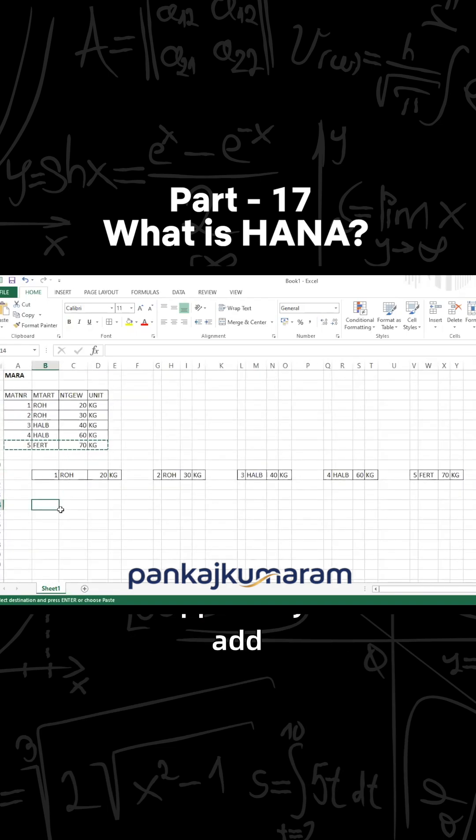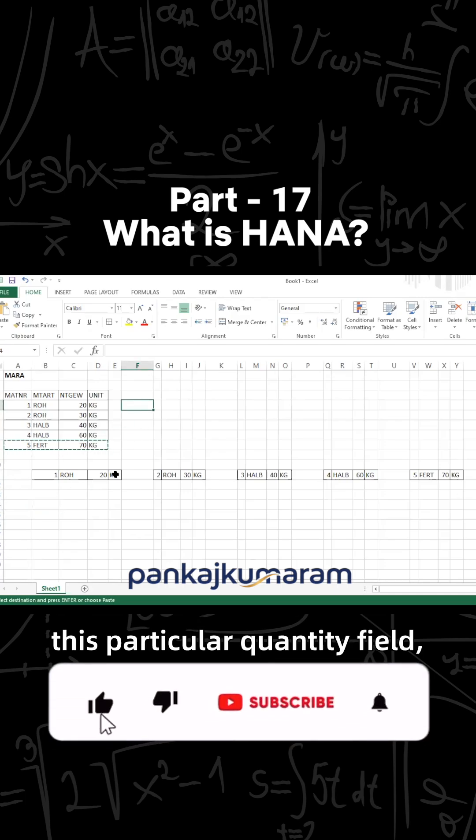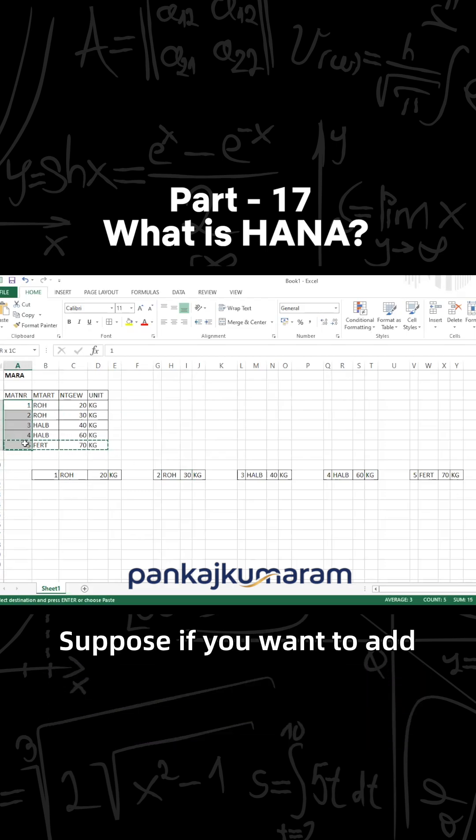Now let's suppose if you have to add this particular quantity field. For example, if you want to add all the material having all this quantity together, then in that case you will have to traverse from here to here.